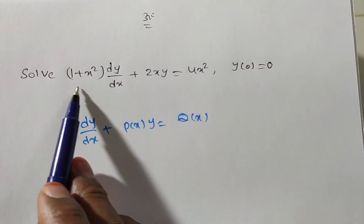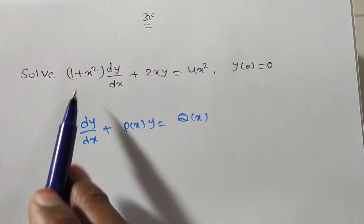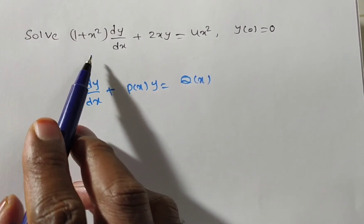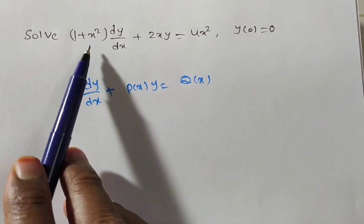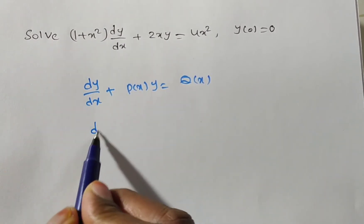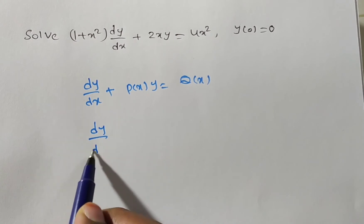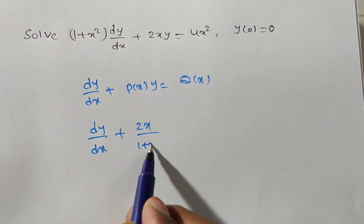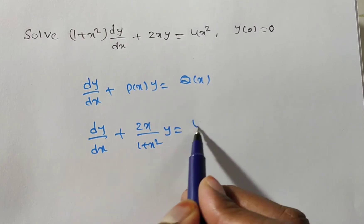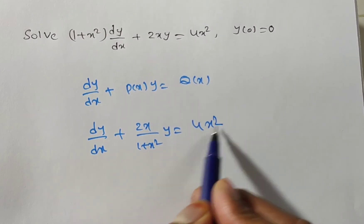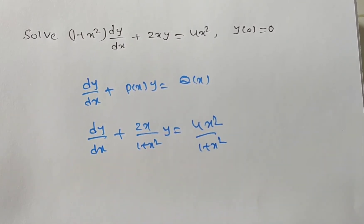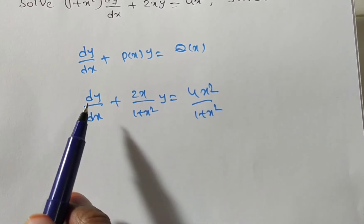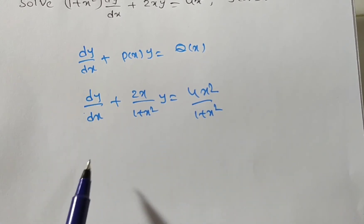On the left side there should be no x terms standing alone. So what we have to do? We divide the given equation by (1 + x²) on both sides. Then we get dy/dx + [2x/(1 + x²)]·y = 4x²/(1 + x²). This is the given differential equation divided by (1 + x²).